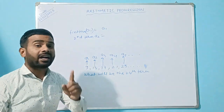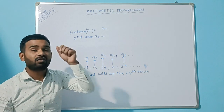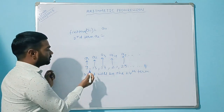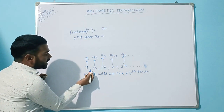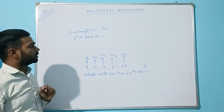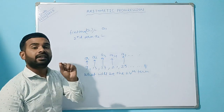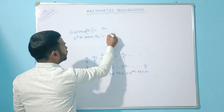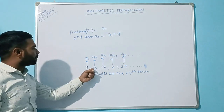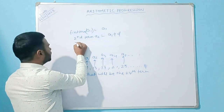To find the second term, we add a particular number called the common difference — denoted by d — to the first term. So the second term a2 equals a1 plus d.